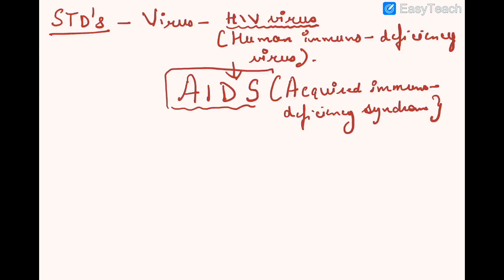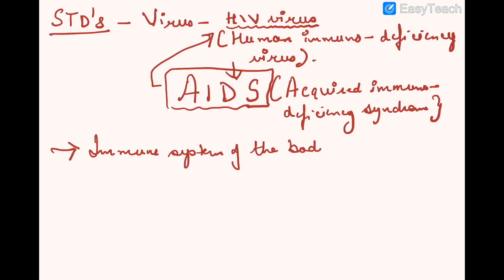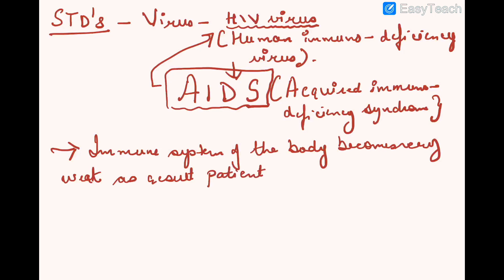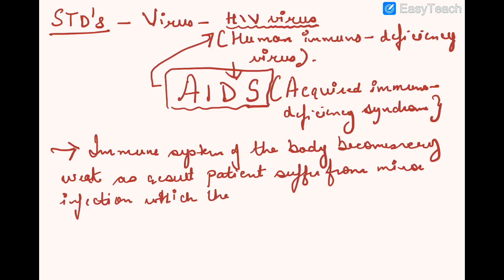AIDS is the STD caused by HIV virus. The first symptom includes weakening of the immune system — the immune system of the body becomes very weak. As a result, the patient suffers from minor infections which the immune system could normally overcome easily.